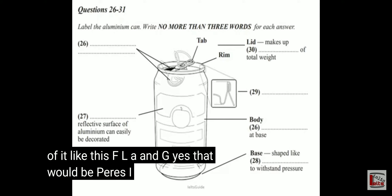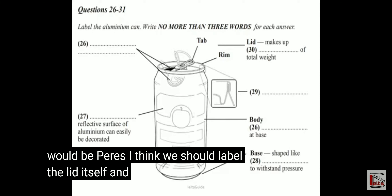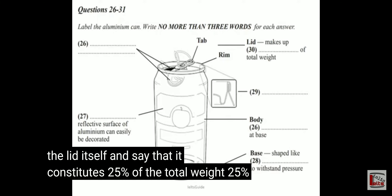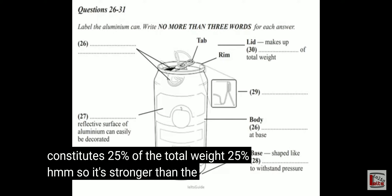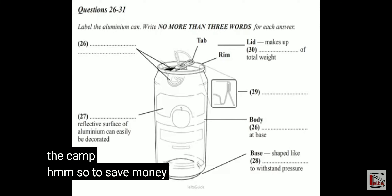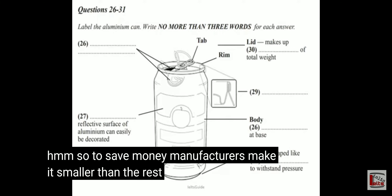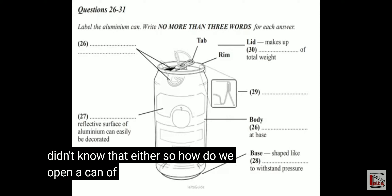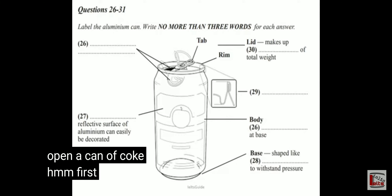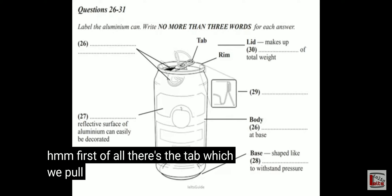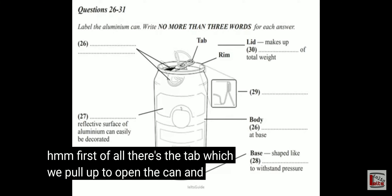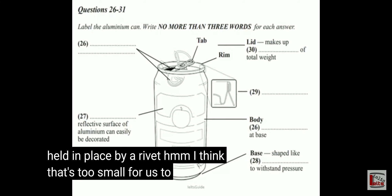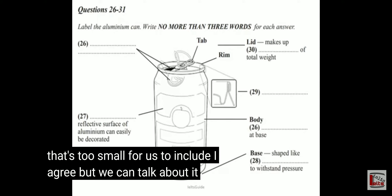That would be clearer. I think we should label the lid itself and note that it constitutes 25% of the total weight. 25%? So it's stronger than the body of the can. To save money, manufacturers make it smaller than the rest of the can. So how do we open a can of Coke? First of all, there's the tab which we pull up to open the can, and that's held in place by a rivet. I think that's too small for us to include in the diagram, but we can talk about it in the presentation.